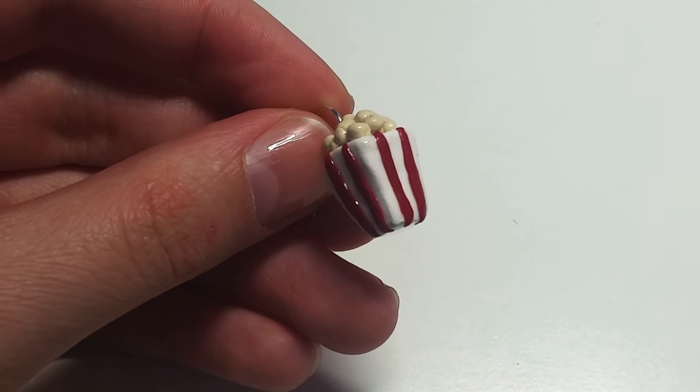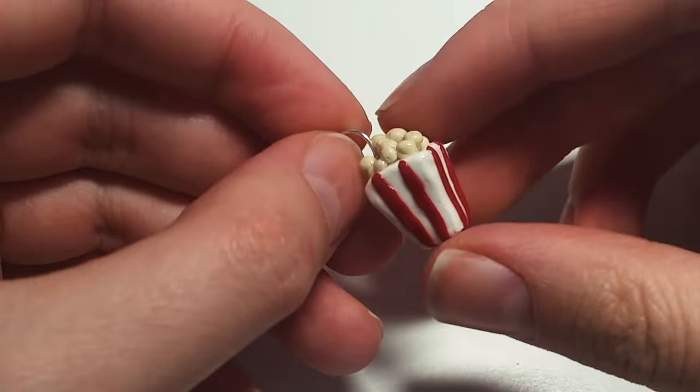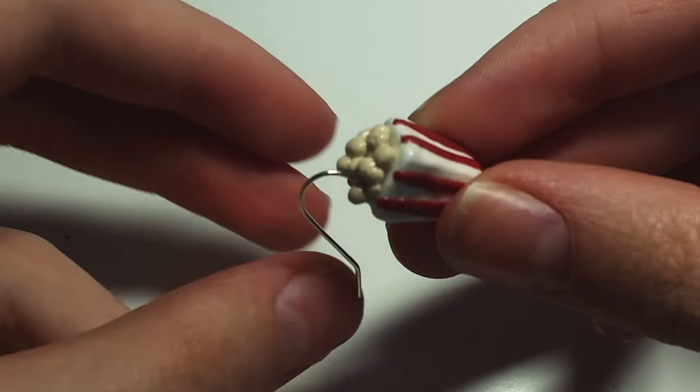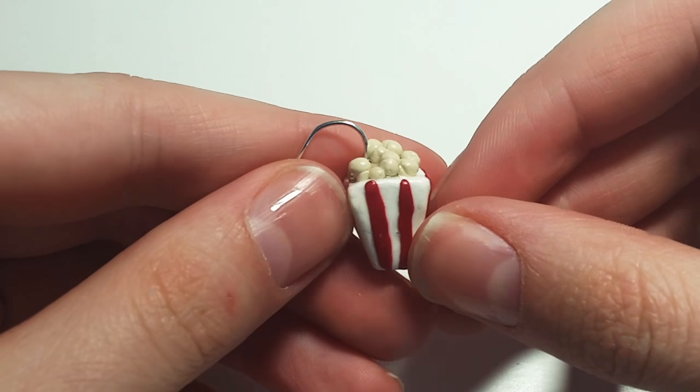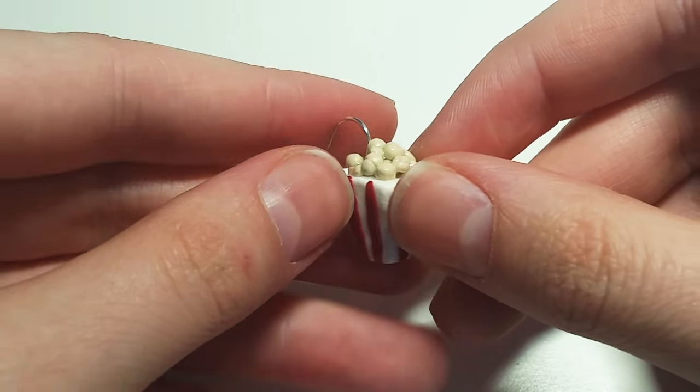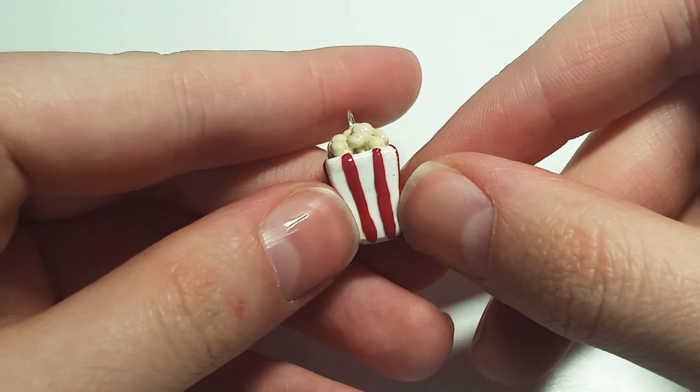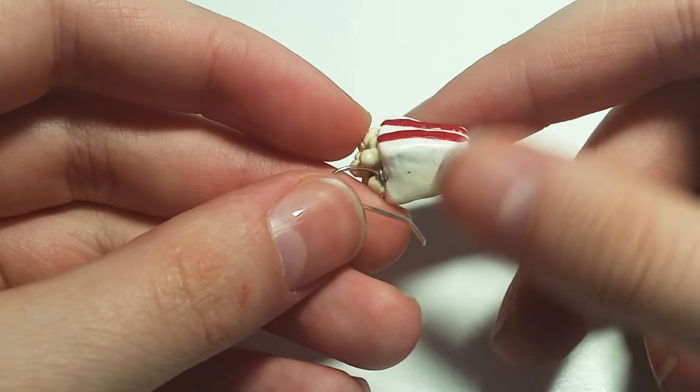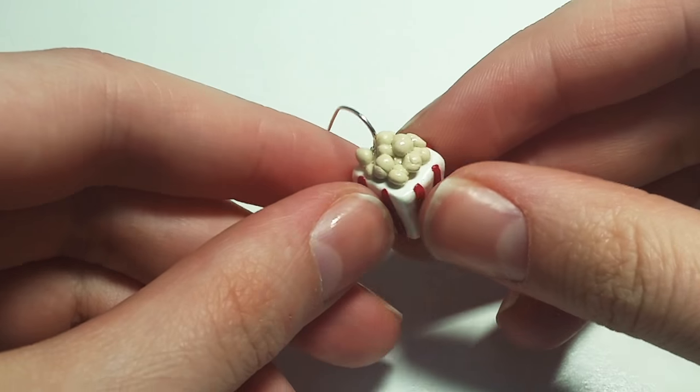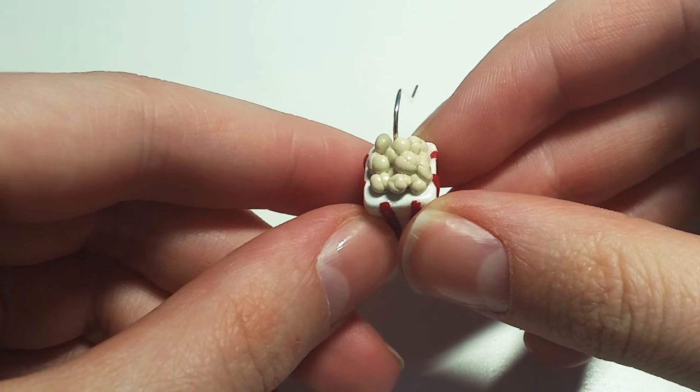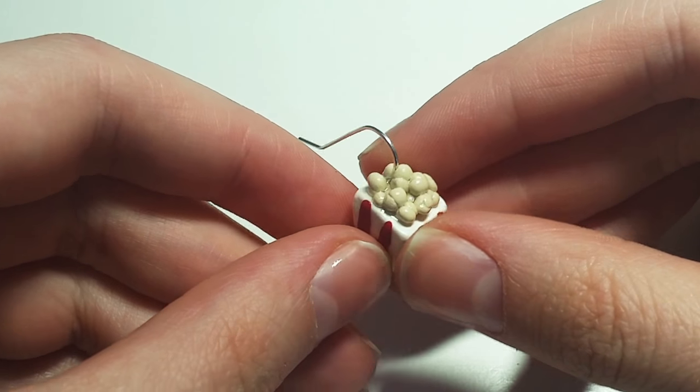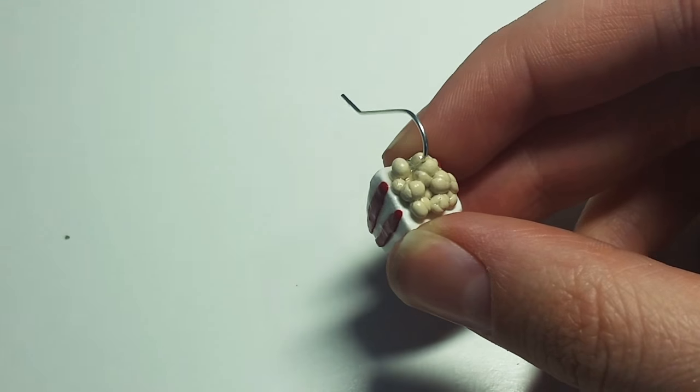For the popcorn all I need to do is take a little chunk of white clay, shape it to your liking. Then this is the hardest part, to make strips of red and just carefully place it on. And for the actual popcorn bits I just took some beige, yellow and white clay, mix it together and just formed a bunch of little balls and stuck them together. That's it, it's that easy.